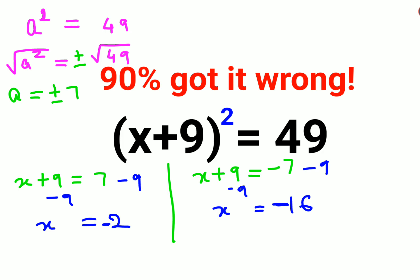Now let's verify by putting this value of x into the question. We have minus 2 plus 9, the whole squared. That can be written as 7 squared which is 49.